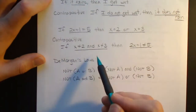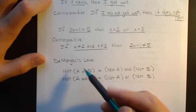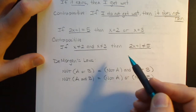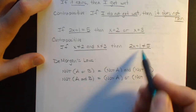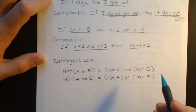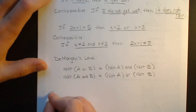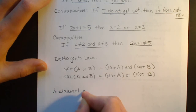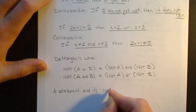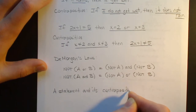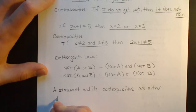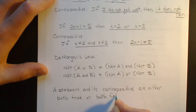Notice that the contrapositive is always going to be true when the original statement is true. If x isn't 2 and x isn't 3, then when you multiply whatever x is by 2 and add 1, you're not going to get 5. You're not going to get 7 either, but that's not what the statement's asking. So the statement and its contrapositive are either both true or both false.